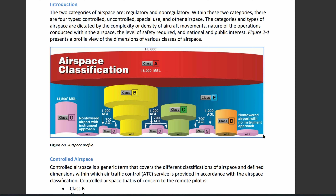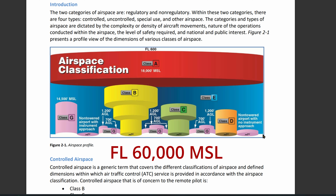Class E typically extends up to but not including Class A, which is 18,000 feet MSL. Here's something to note: all airspace above FL — flight level — 600 is Class E. When you see smaller numbers like 600, append two zeros, so it's really 60,000 feet. All airspace above flight level 60,000 is Class E.